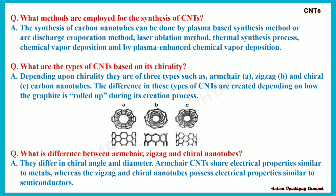What are the types of carbon nanotubes based on chirality? Depending upon chirality, they are of three types: armchair (figure A), zigzag (figure B), and chiral (figure C). The difference in these types is created depending on how the graphite is rolled up during creation. Armchair carbon nanotubes share electrical properties similar to metals, whereas zigzag and chiral nanotubes possess electrical properties similar to semiconductors.